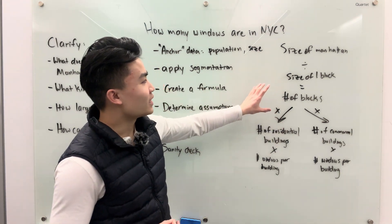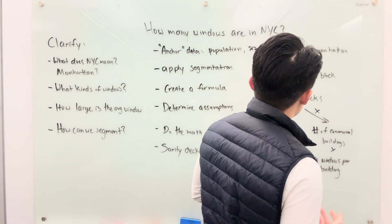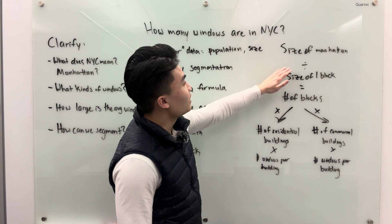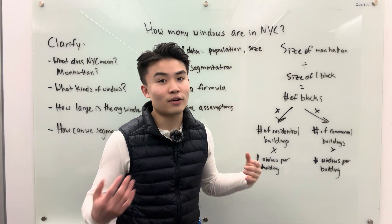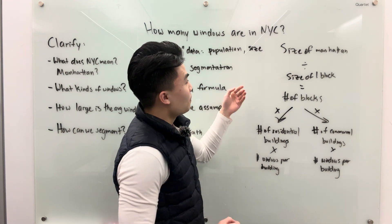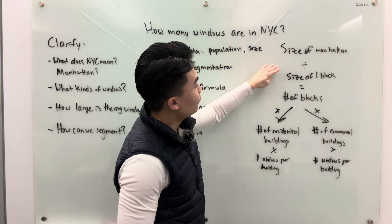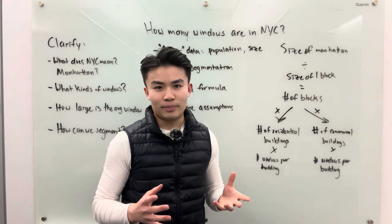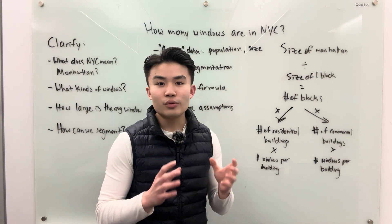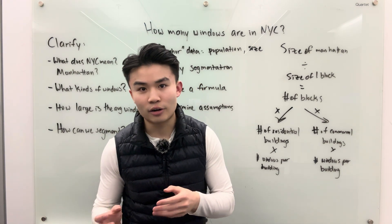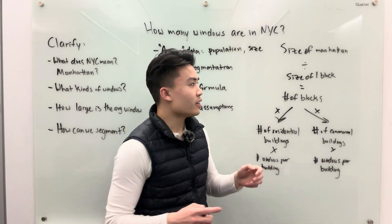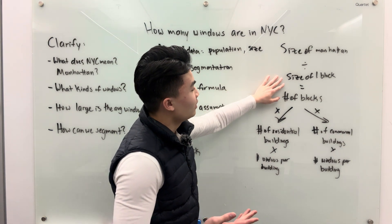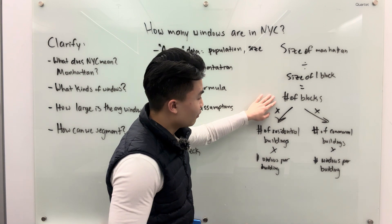I've written some stuff down here on the left-hand side. What came to my mind when thinking about how many windows are in New York City is that my anchor number can be the size of Manhattan — specifically the square mileage of Manhattan. Based on that, I would then want to figure out how many blocks on average are in Manhattan. Why blocks? Because it's an easier unit with which I can then estimate how many buildings there are and then how many windows there are in each building. So I divide by the average size of one block to get an estimate of the number of blocks.